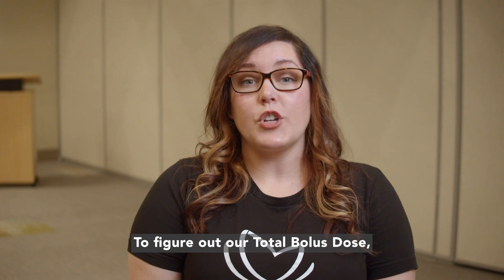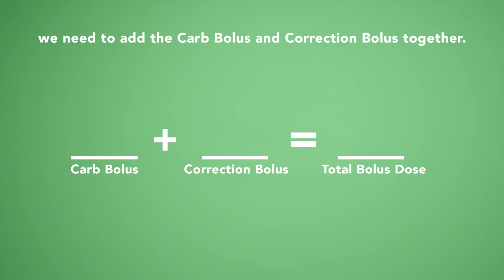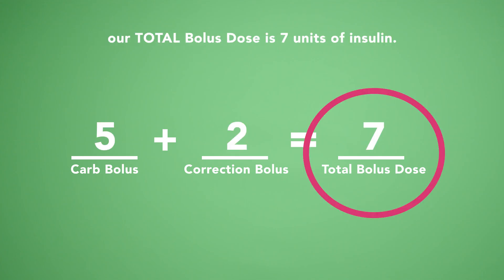To figure out our total bolus dose, we need to add the carb bolus and the correction bolus together. By adding the carb and correction boluses together, our total bolus dose is 7 units of insulin.